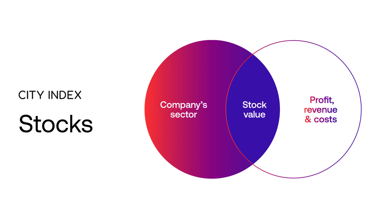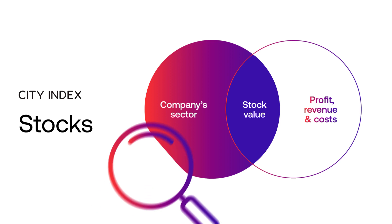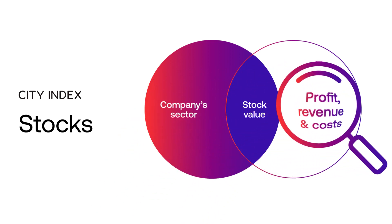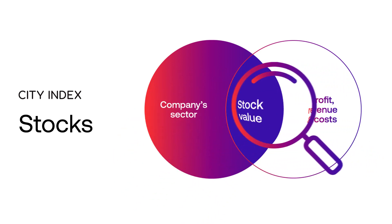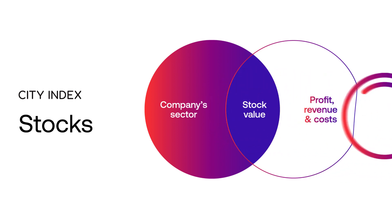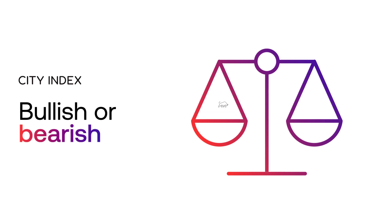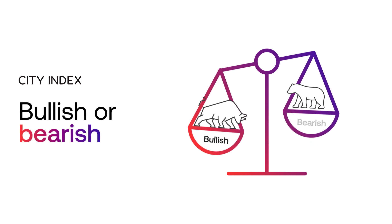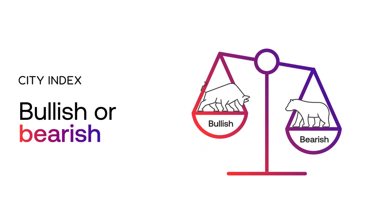For traders who are focused on stocks, there is generally much more emphasis on the asset itself. A stock trader will often look at the company's sector and then look at the company's earnings reports to develop an understanding of the stock's profit, revenue, and costs. Analyzing this information can help a trader form a longer-term bullish or bearish outlook on an instrument.